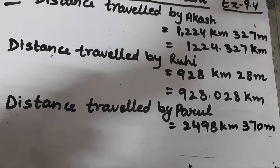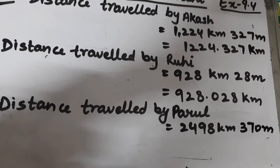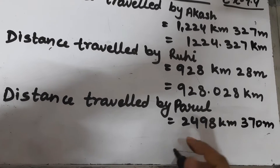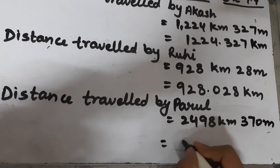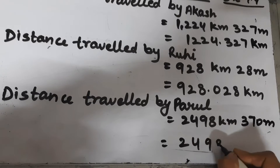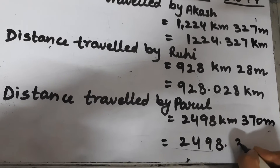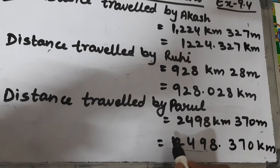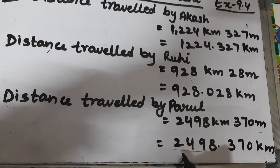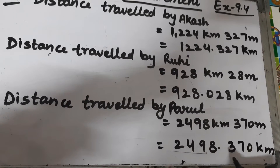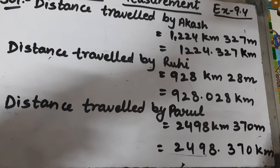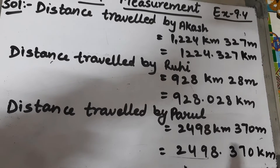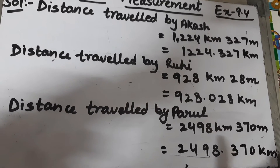The distance traveled by Parul is 2498 kilometers 370 meters. We will convert this also into kilometers, so this will be 2498.370 kilometers. So the distance traveled by Parul is 2498.370 kilometers.